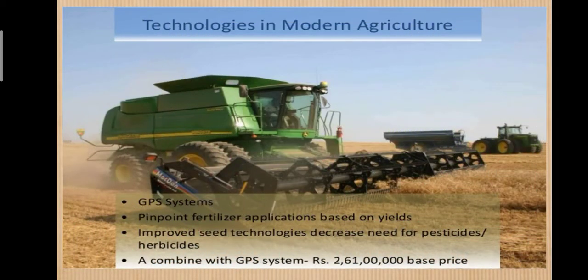Now I am going to tell you about the technologies we are using in the modern type of agriculture. In olden days, farmers worked very hard to plough the fields. But now we have machines that help in the cultivation of crops. As you can see, the pinpoint fertilizer use, improved seed technologies, and tractors and harvesters are used in the fields.